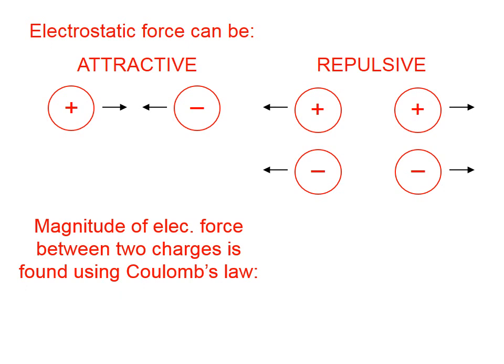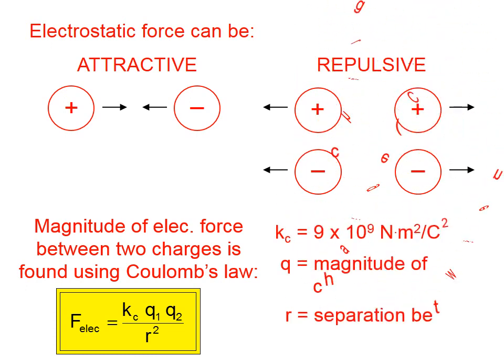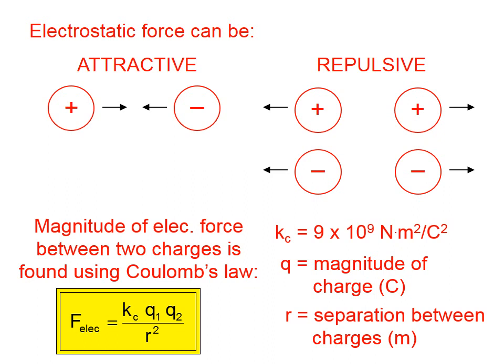The magnitude, or the strength, of the electric force between two charges is found using Coulomb's Law. Coulomb's Law is this equation: the electric force equals a constant k_c, times the magnitude of one charge q1, times the magnitude of a second charge q2, divided by the separation between the charges in meters squared.